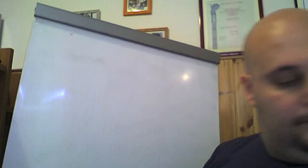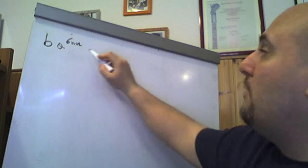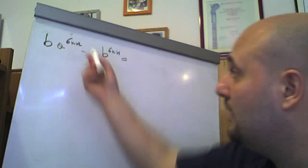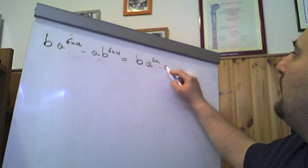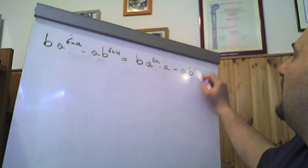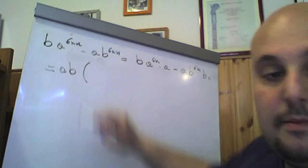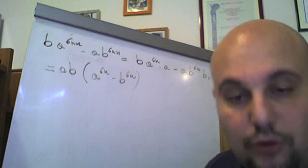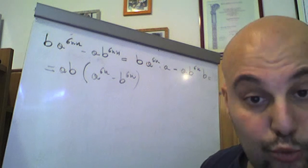Vediamo ancora questo, per rimanere giusto in tema di potenze. Volevo vedere b·a^(6n+1) meno a·b^(6n+1). Prima di effettuare qualsiasi cosa, quando abbiamo delle potenze, quando abbiamo degli esponenti interi positivi al numeratore delle somme, dissociamo le potenze. Quindi questo lo scriviamo come b che moltiplica a^(6n) che moltiplica a, meno a che moltiplica b^(6n) per b. Dove vedete che in entrambi i casi possiamo raccogliere a fattore comune un ab. E quello che rimane è a^(6n) meno b^(6n), dove a^(6n) meno b^(6n) è una differenza tra potenze uguali di ordine pari — che sono 6 — perché a^(6n) si può scrivere come (aⁿ)⁶, così come b^(6n) si può scrivere come (bⁿ)⁶.